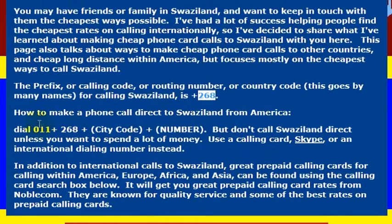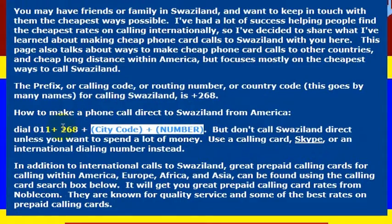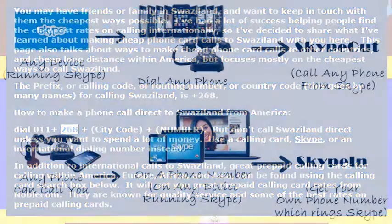If you're dialing from the United States on an internationally enabled phone line, which is usually a landline, you dial 011, then 268, which is the country code, and then the phone number you're trying to reach. The country code for Swaziland is 268.